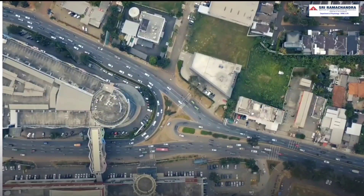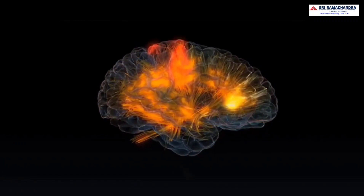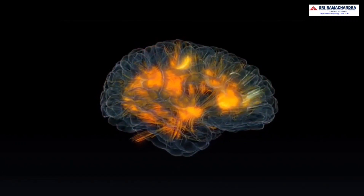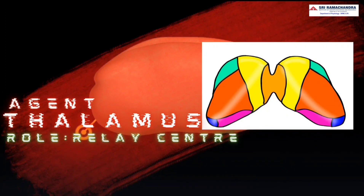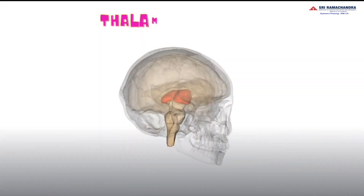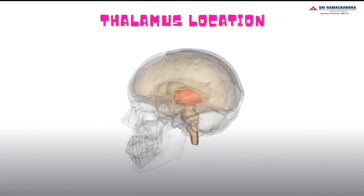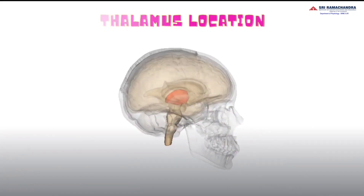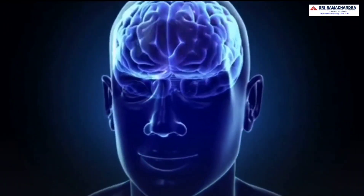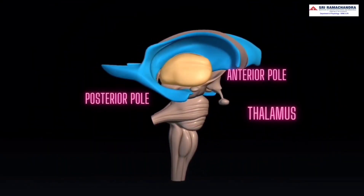Just like how Kathipara has different routes to reach your destination, the thalamus has different tracks to reach different areas of the cerebral cortex. The thalamus is an egg-shaped structure situated obliquely atop the brainstem. It acts as a sensory relay station — it receives ascending sensory inputs and projects them to the sensory cortical areas. It forms part of the floor of the lateral ventricle.